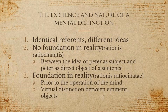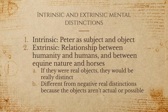There are intrinsic and extrinsic mental distinctions. The first kind is intrinsic — between Peter as subject and object — which maps onto the purely rational distinction with no foundation in the object. Then there's the extrinsic mental distinction, which is the relationship between humanity and humans, or between equine nature and horses. If they were real objects, they would be really distinct, but because they're impossible objects — not real, and not only not real but not possible — these are going to be a kind of mental distinction.